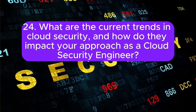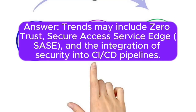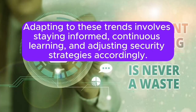24. What are the current trends in cloud security, and how do they impact your approach as a cloud security engineer? Trends include zero trust, secure access service edge (SASE), and the integration of security into CI/CD pipelines. Adapting to these trends involves staying informed, continuous learning, and adjusting security strategies accordingly.